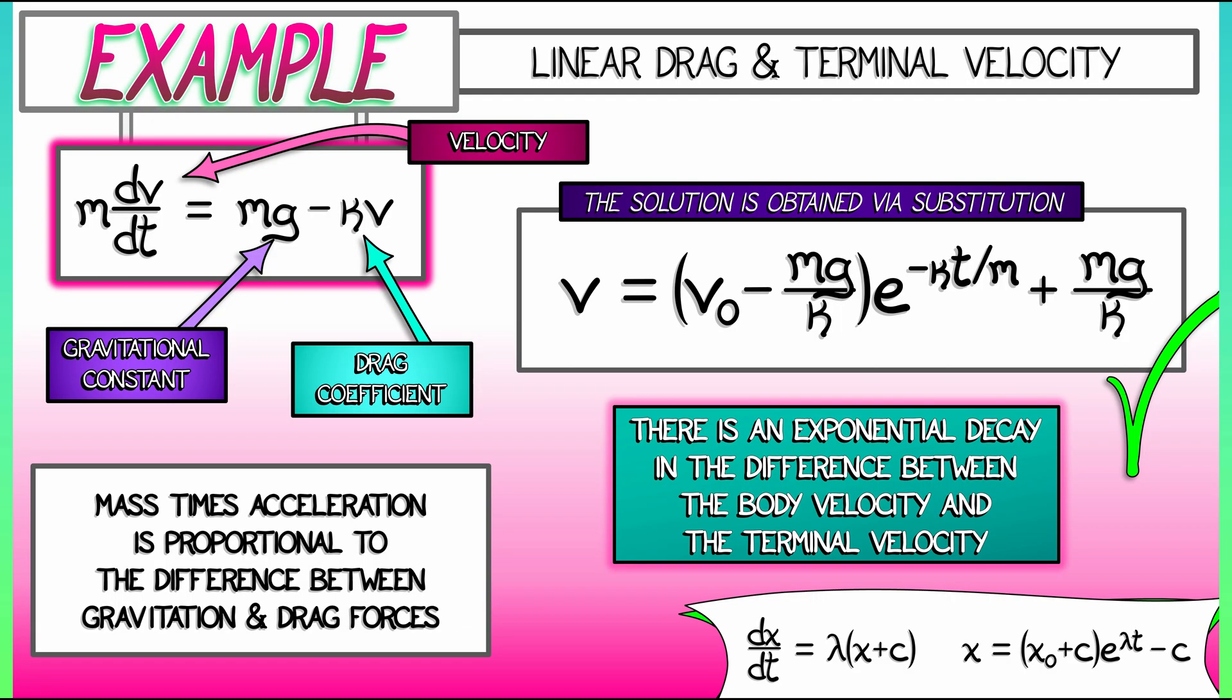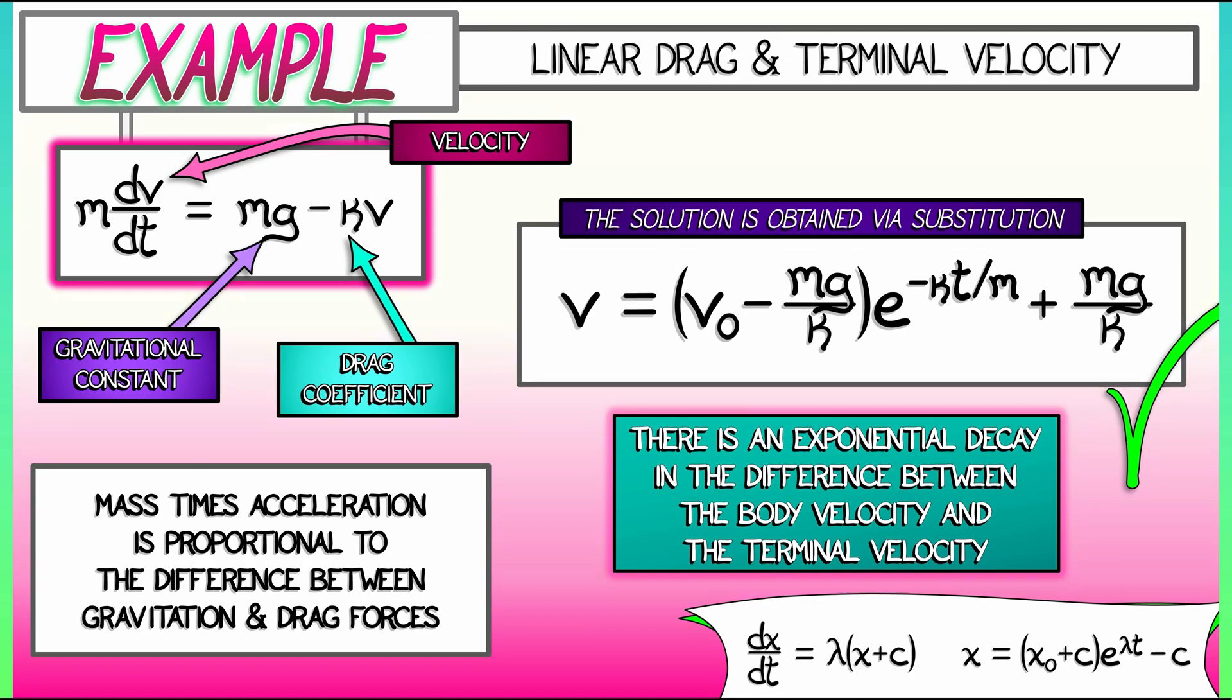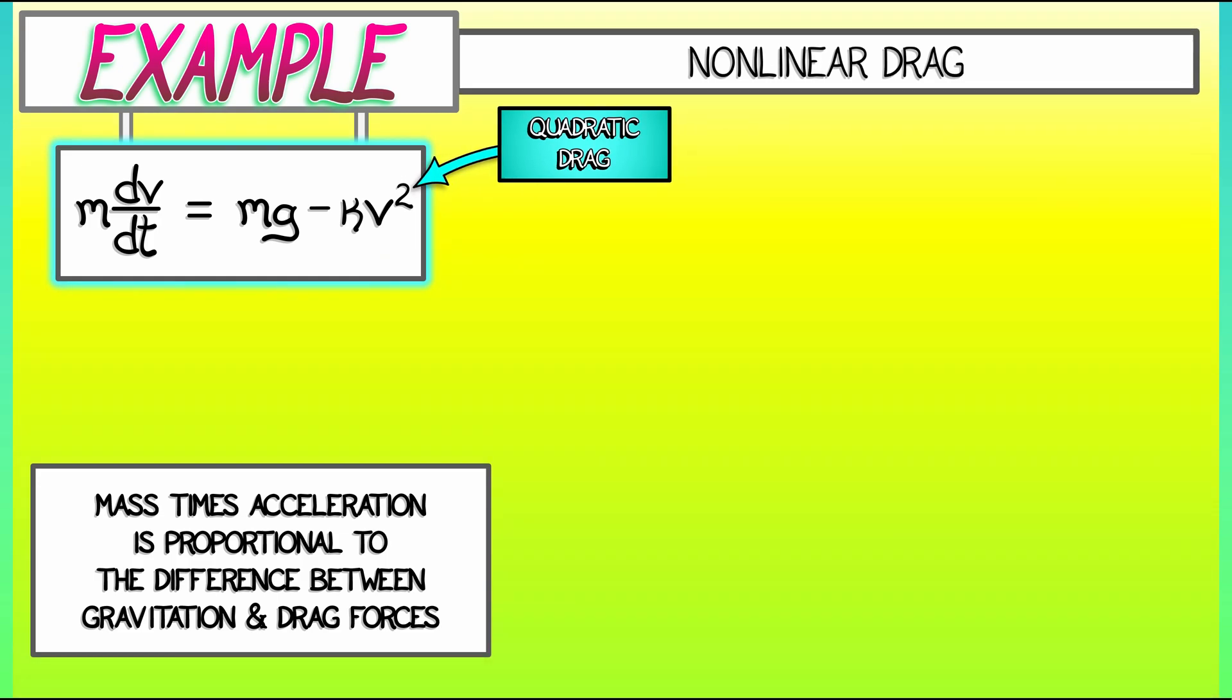Think back to when we did the drag force on a falling body reaching terminal velocity. We had that affine equation. Now what happens if we change it up a bit? If instead of saying that the drag force is proportional to the velocity, let's say that it's proportional to the velocity squared. In the case of quadratic drag, we have the differential equation m times dv/dt equals mg minus kappa v squared. This is not linear. We cannot apply our previous solution. So what do we do?